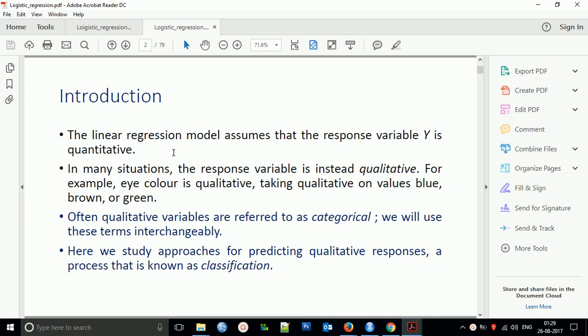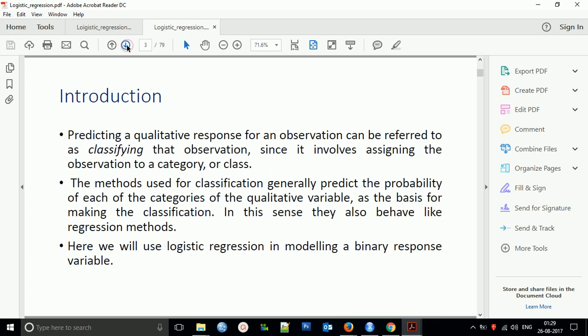In this case, how can we calculate the dependency and relationship between input and output variables? To study this, we use the process of classification. Predicting a qualitative response for an observation can be referred to as classifying the observation, which involves assigning observations to a category or class.